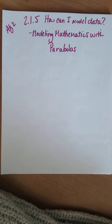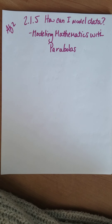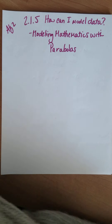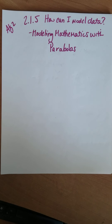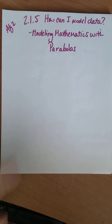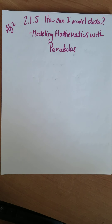Within this lesson you should have a Google Doc that has the title something like 'The Jumping Jackrabbit Problem.' That's what it's called. The question here, section 2.1.5, is: how can I model data? We're going to be modeling mathematics with parabolas.